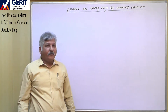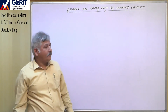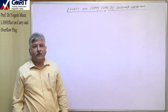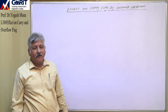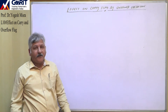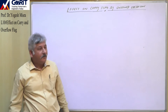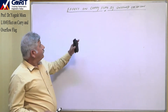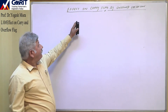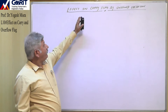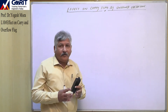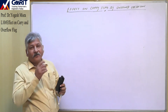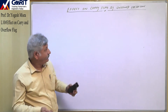In the last lecture we discussed about the representation of signed numbers and unsigned numbers in an 8-bit number system. Today we will discuss the effect on the carry flag when we are performing arithmetic operations over unsigned numbers.